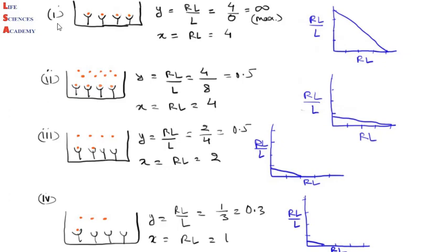In case number one, there are four ligand molecules, all of which have bound to the receptor. We are assuming that the receptor has high affinity for the ligand, so the ligand first saturates the receptor and if excess molecules are present they remain in solution. For the y-axis, we calculate the RL/L value: the receptor-ligand complex is 4 and there is no free ligand, so that value is 0, giving infinity — the maximum value. For the x-axis, the receptor-ligand complex is 4. The slope is quite high.